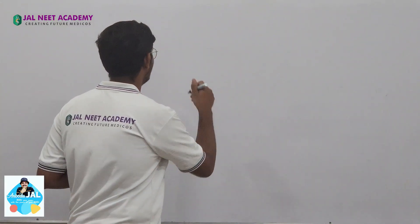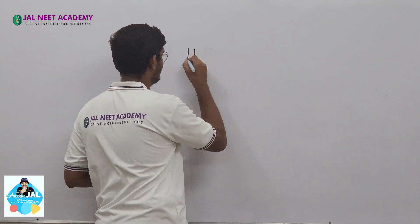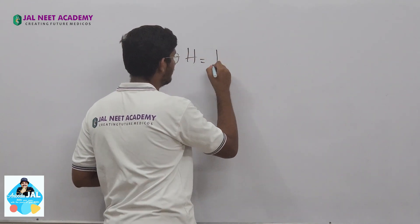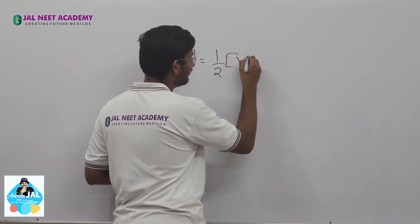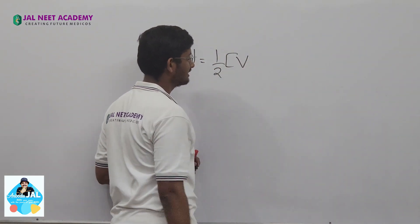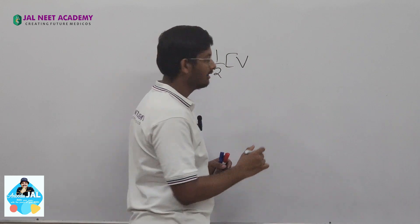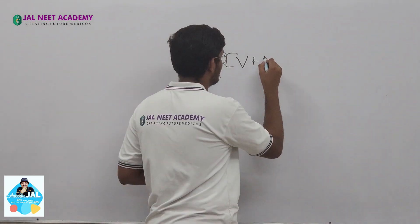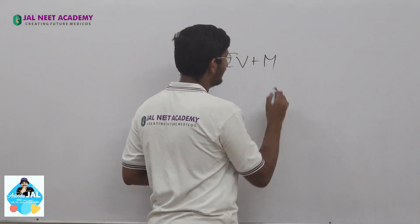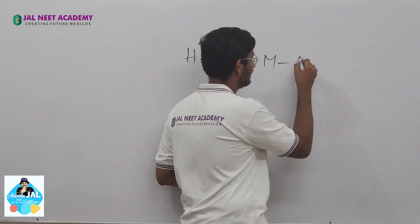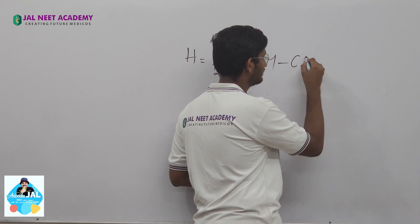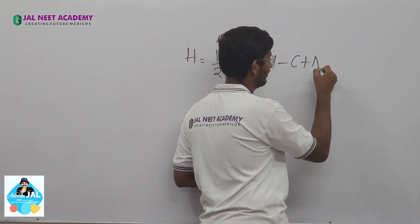What is the formula for Hybridization? H is equal to one-half into the number of valence electrons of the central atom, plus number of monovalent atoms, minus number of cations, plus number of anions.